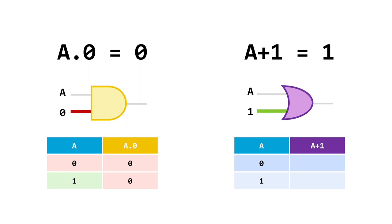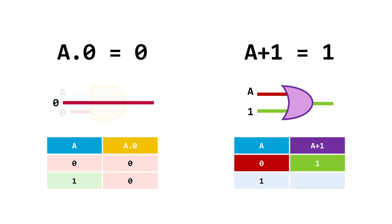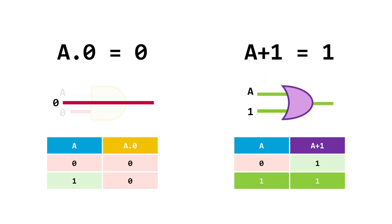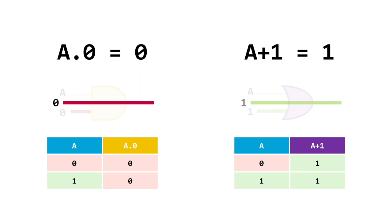We could completely remove this gate and just run the OFF cable into the next component and get the same result. As a simplification in Boolean logic, this means that if we see anything that has an AND 0 next to it, we can simplify that into just being 0. A similar thing is true for A OR 1. If one of the inputs to an OR gate is permanently ON, then changing input A doesn't affect the output — the OR gate always gives us a 1. So we can replace the entire circuit with the 1 value cable, meaning that in a Boolean expression, if we see anything that is OR 1, we can simply replace it with 1.